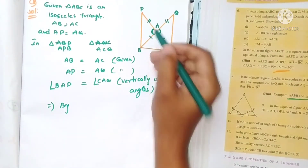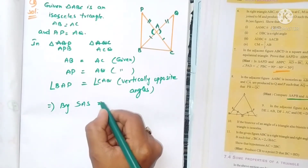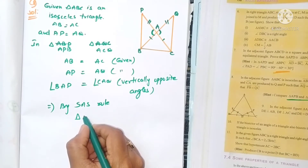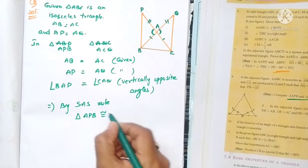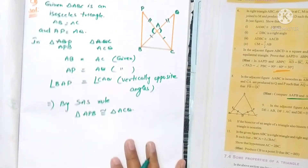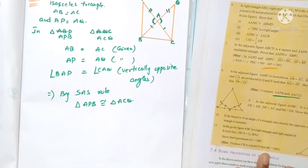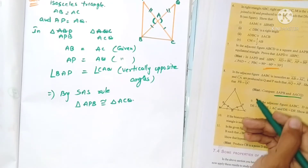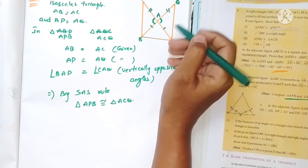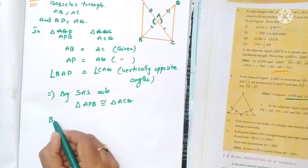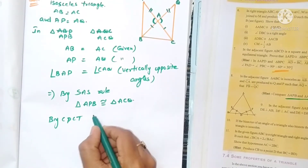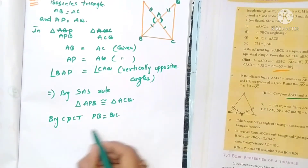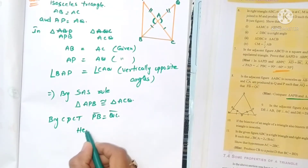Vertically opposite angles are equal. So by SAS rule — two sides and the included angle — triangle APB is congruent to triangle AQC. Since the two triangles are congruent, corresponding parts are also equal. By CPCT, PB equals QC, which is what we had to prove. Hence proved.